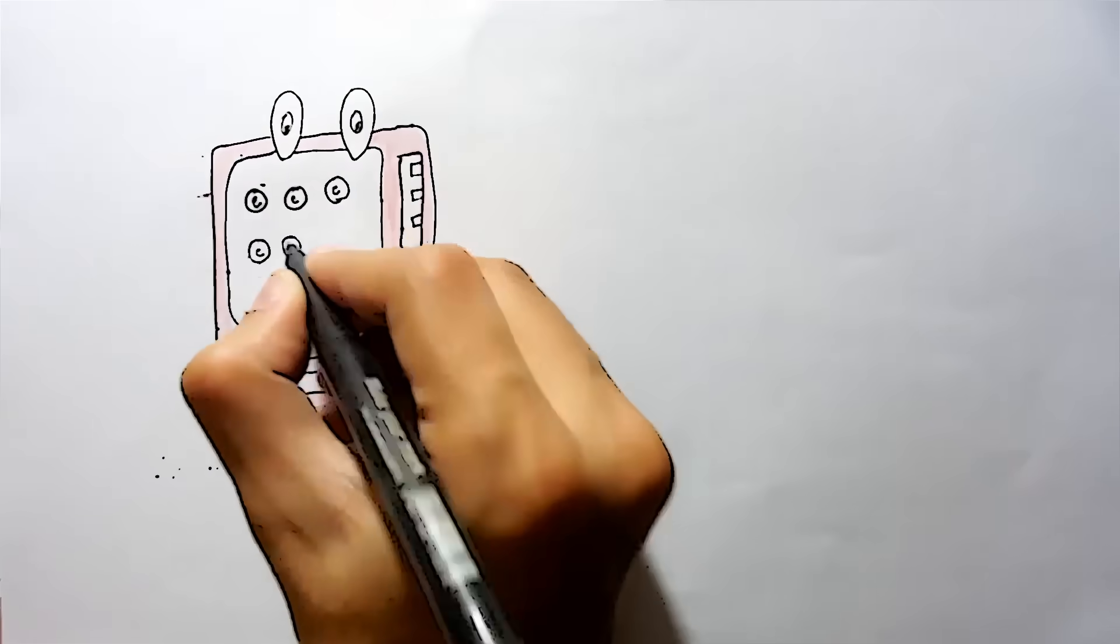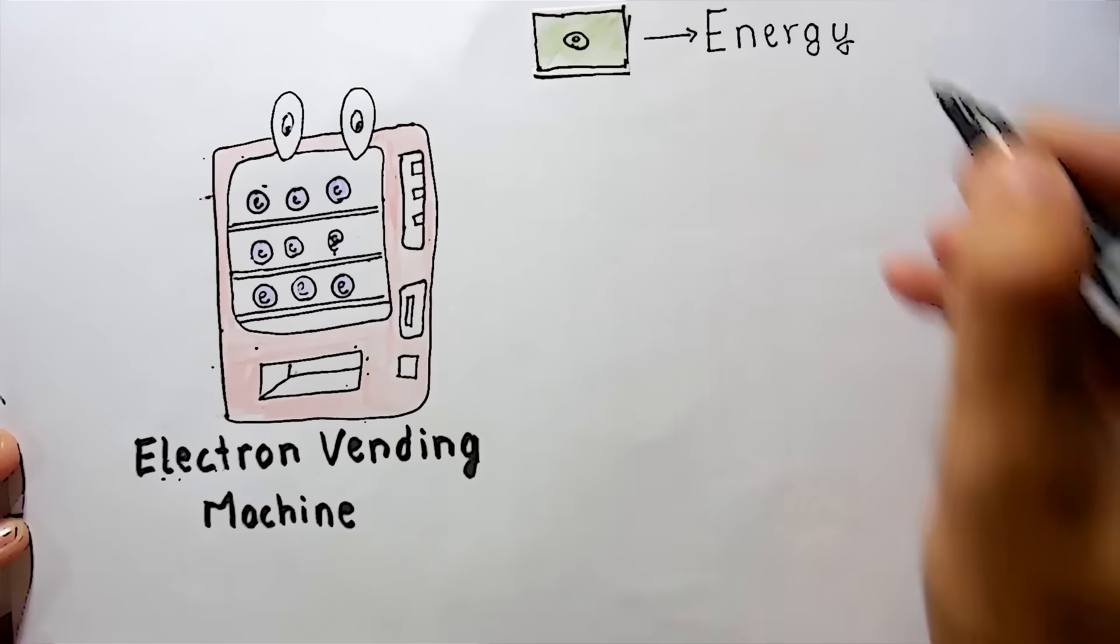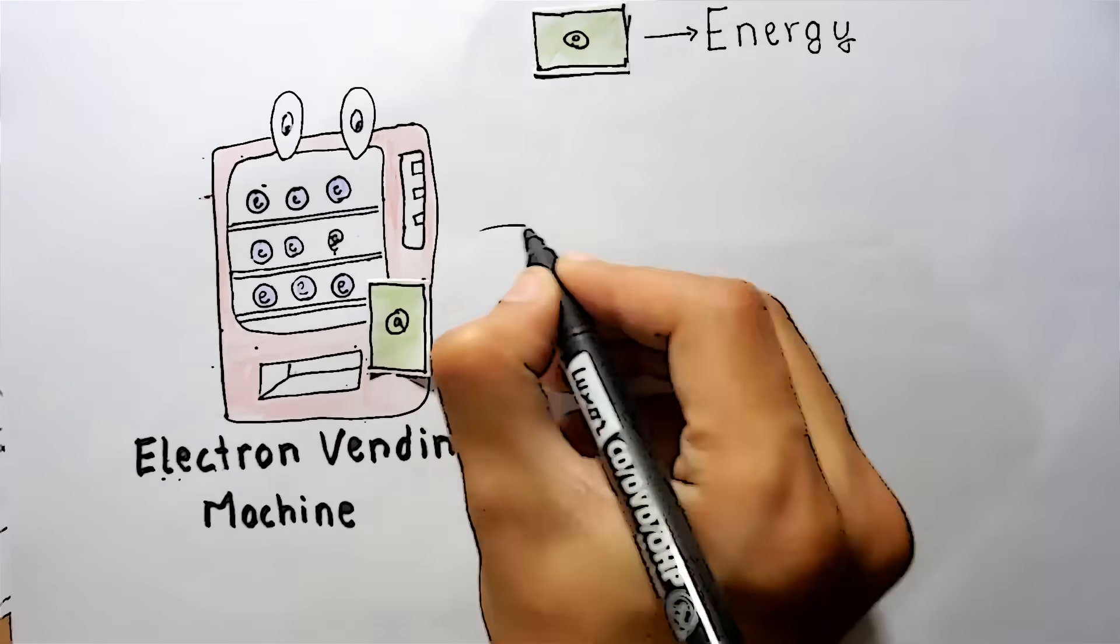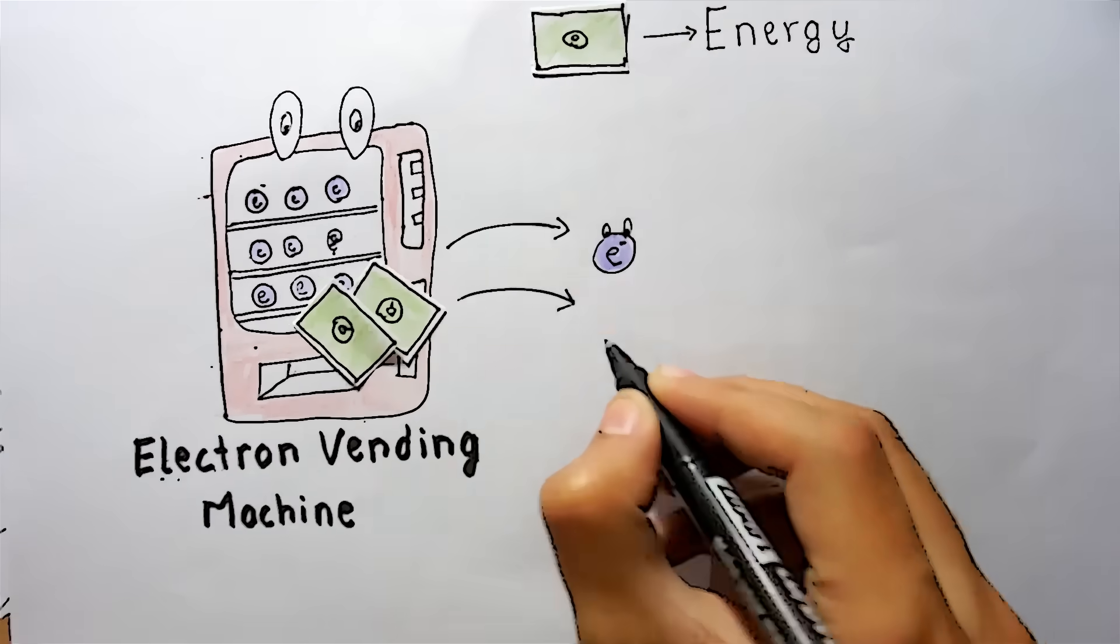Think of what we use as vending machines. You put enough money in, get a packet of chips. You put more money, you get another packet. The money is energy, and the packets are particles. So if you have enough energy, you can get as many particles as you want.